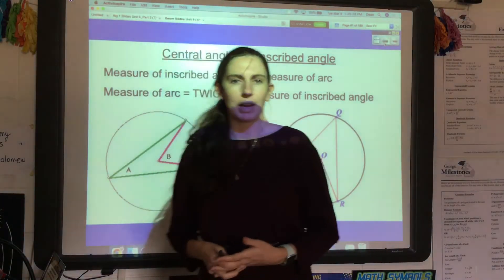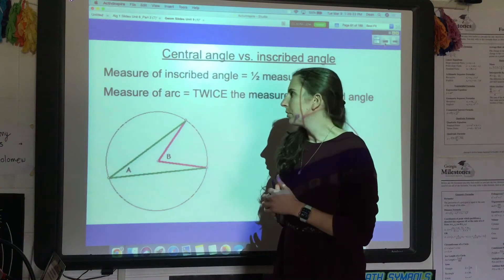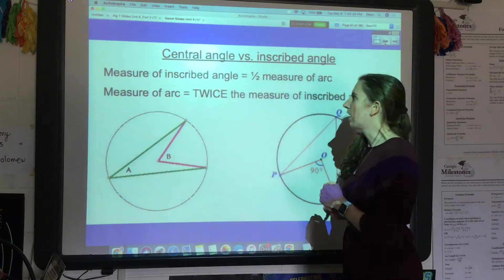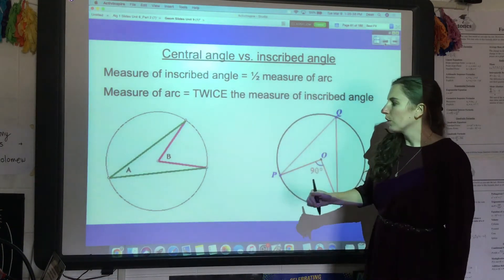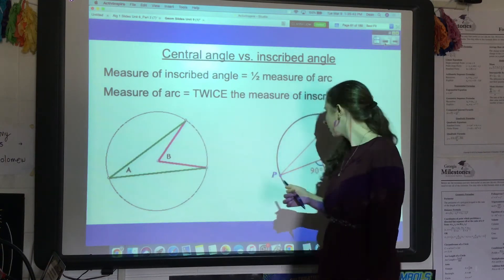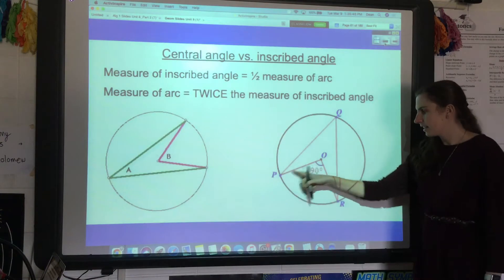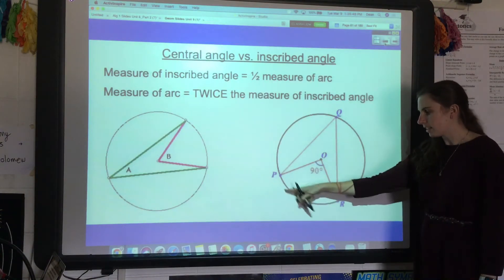In this video we're going to talk about circumscribed angles to a circle, but before we do I want to refresh on central angles and inscribed angles. Remember, a central angle is exactly what the arc measure is. So if the central angle is 90 degrees, then the arc itself is also 90 degrees.